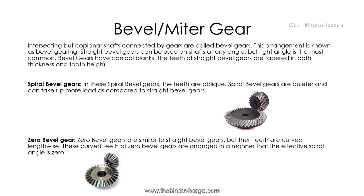Bevel gears: intersecting but coplanar shafts connected by gears are called bevel gears, and this arrangement is known as bevel gearing. Straight bevel gears can be used on shafts at any angle, but right angle is the most common. Bevel gears have conical blanks. The teeth of straight bevel gears are tapered in both thickness and tooth height.